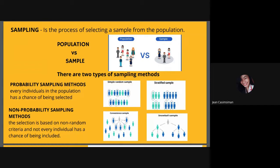In non-probability sampling, the selection is based on non-random criteria and not every individual has a chance of being selected. There are two types: convenience sampling, where you survey only those convenient at that moment, and snowball sampling, where participants recruit others. Snowball sampling is usually used when the topic is sensitive, such as information about HIV/AIDS.